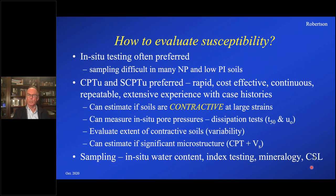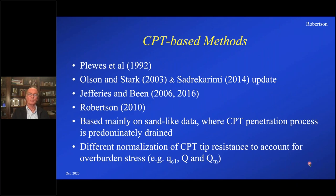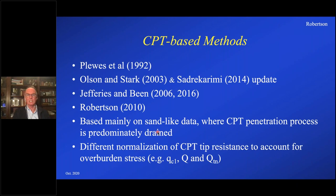Then do reconstituted testing to determine the critical state line and how curved it is in the stress range of interest. There are a number of CPT-based methods driven to evaluating whether or not the materials are contractive — either evaluating the state parameter directly or indirectly just determining whether or not it's contractive, or in the case of Olson and Stark going straight to the liquefied undrained strength. Howard Plewis with Mike Jefferies and Mike Davies were the first to do this. Then Olson and Stark had their method, Sadrekarimi gave some updates, and Jefferies and Bean in their book went into it in extensive detail. I discussed it in 2010. It's mostly sand-like data where the CPT is predominantly drained, and there are different normalizations, which is why you often can't compare them directly.